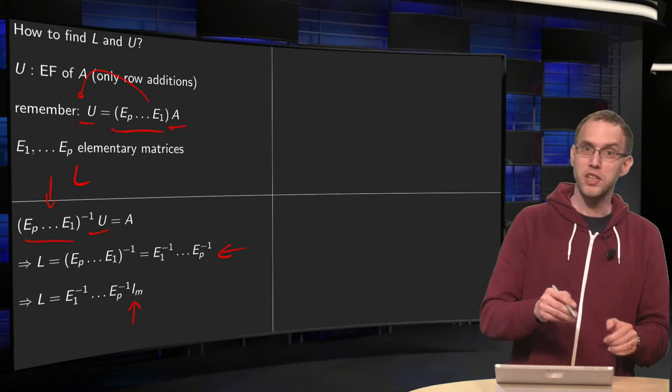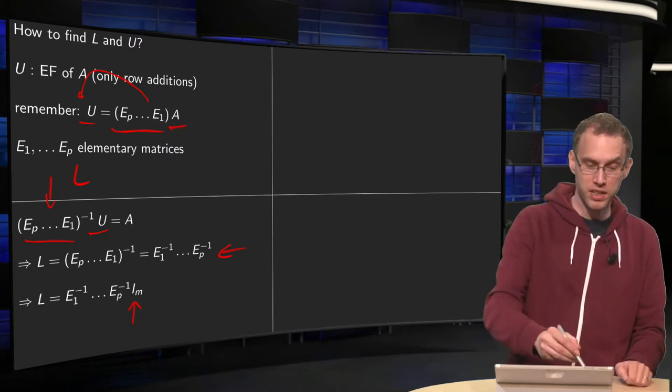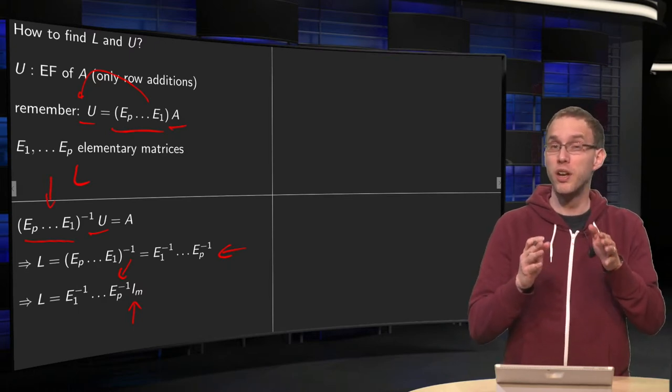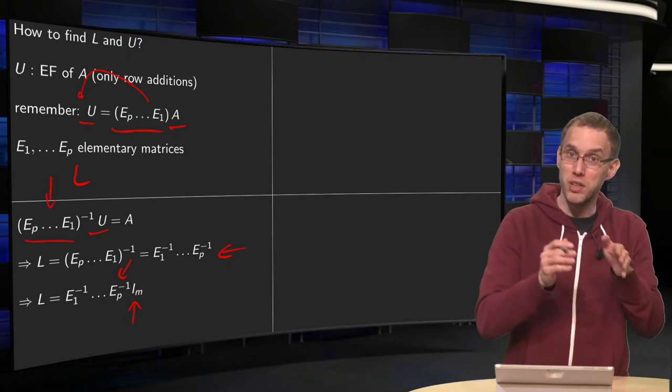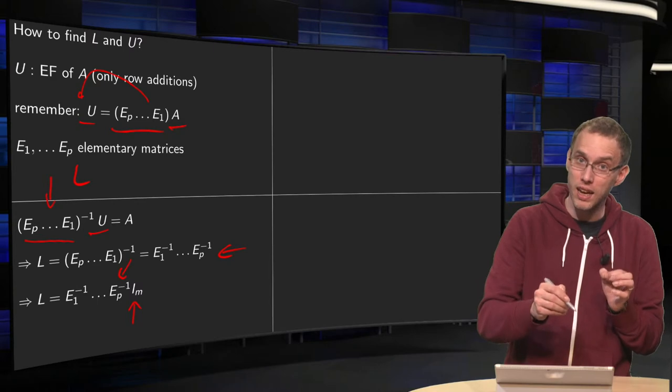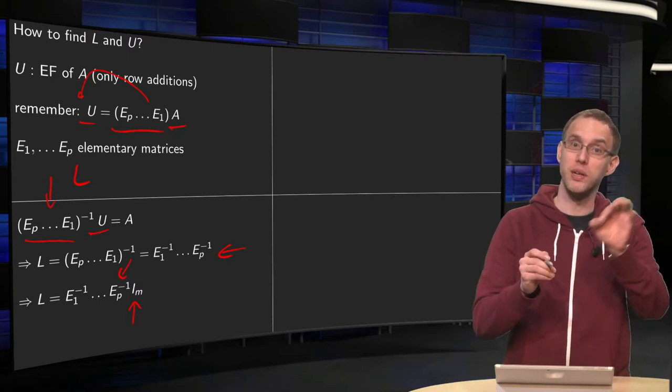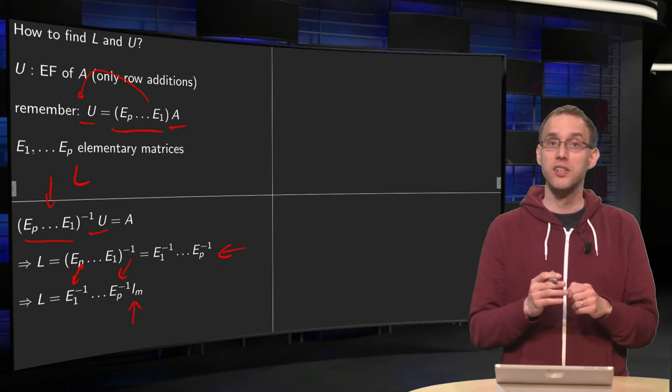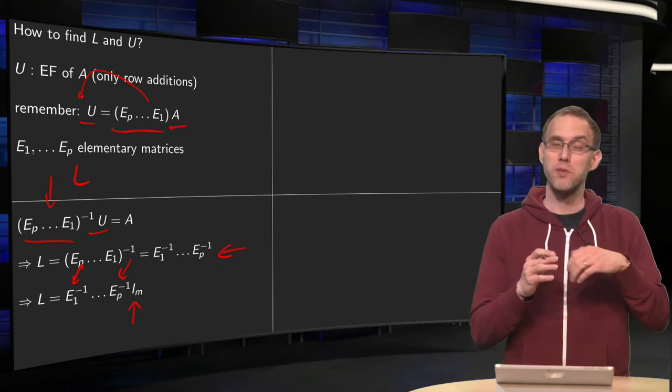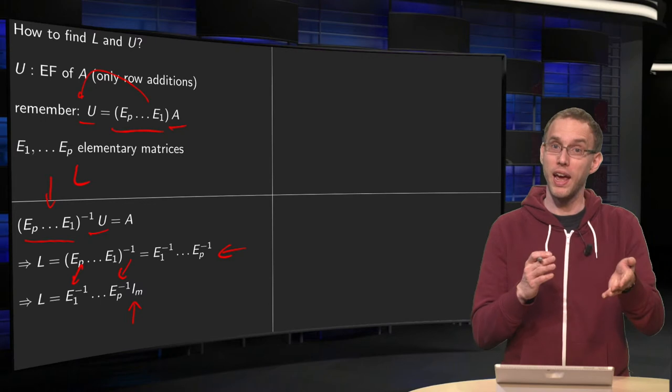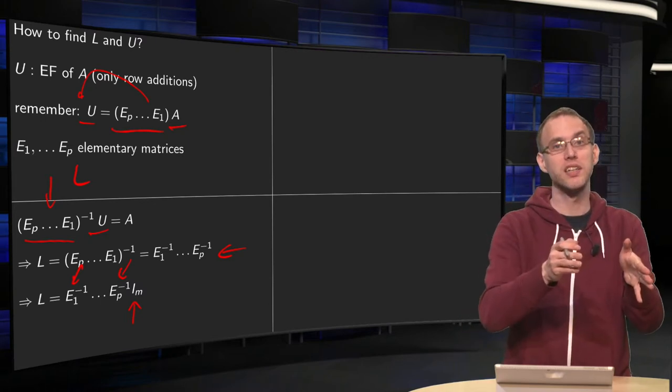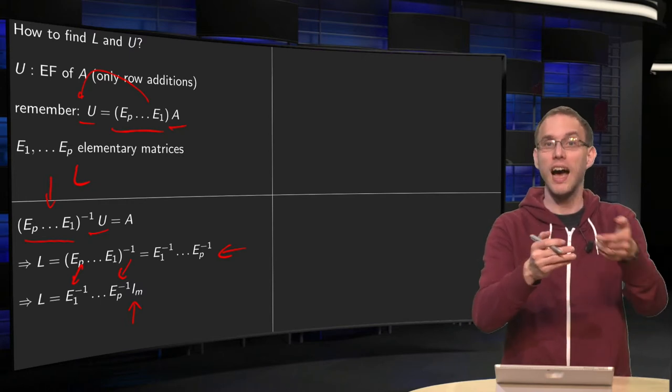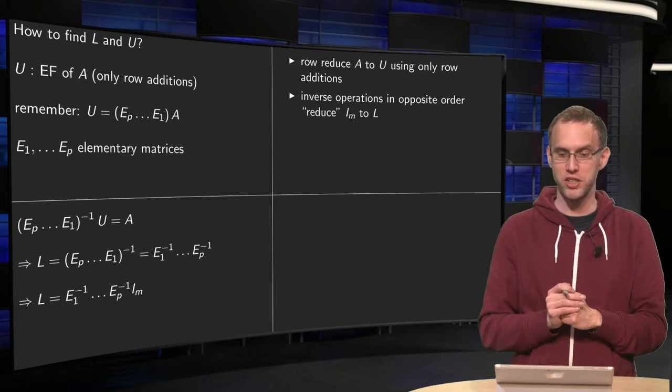What you basically do, you start with your identity matrix, and you do the row operations which reduce A to U. You do the same operations, but now in the inverse order. So, you start with P and you end with 1, and the inverse operation. So, that is how you can find your L. Keep track of what row operations you do on A to get U. Then start with identity matrix. Do the same operations, but then their inverses and in the inverse order.